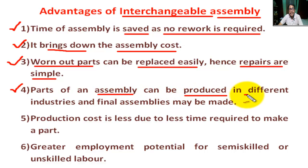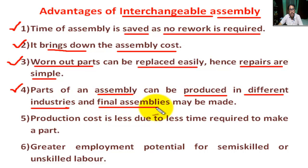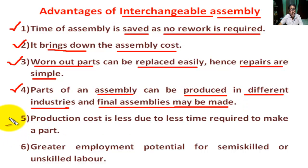Number four: parts of an assembly can be produced in different industries. Different parts are assembled in different industries and the final assembly can be made in another place.